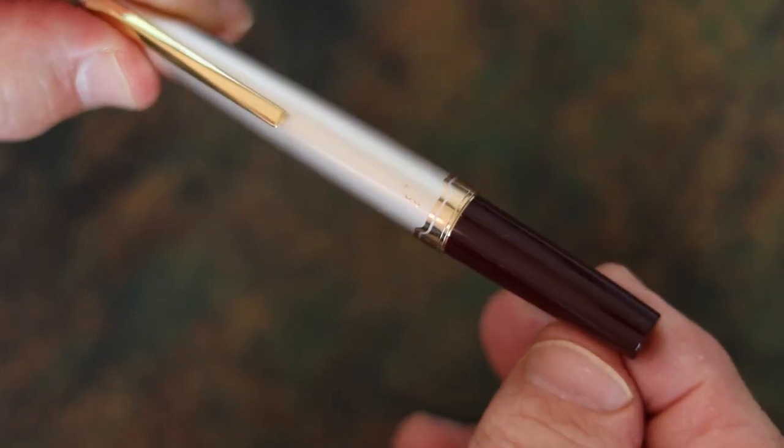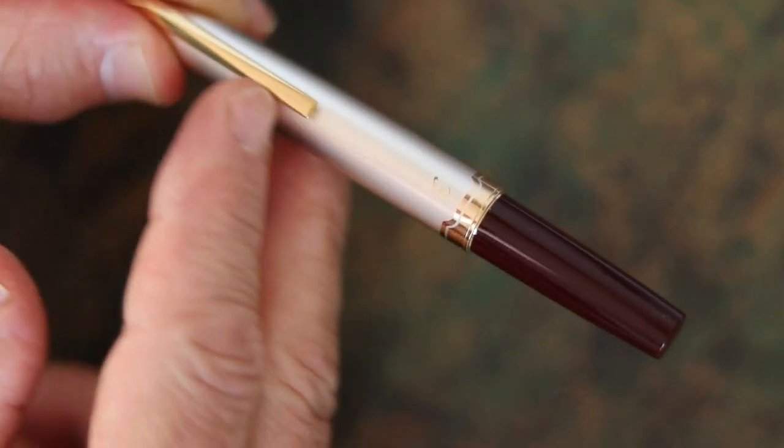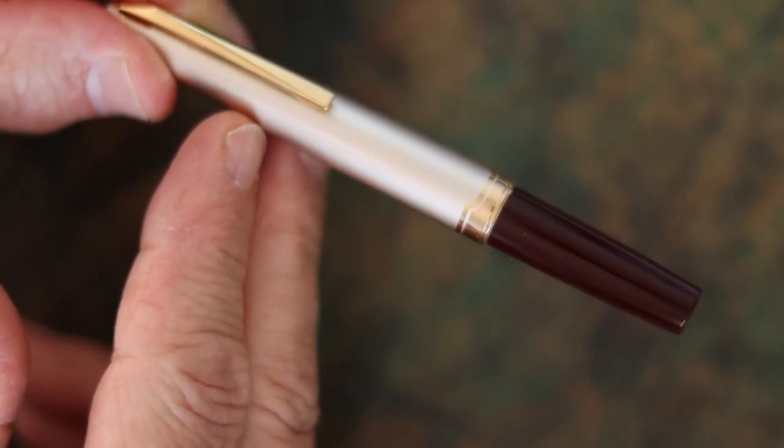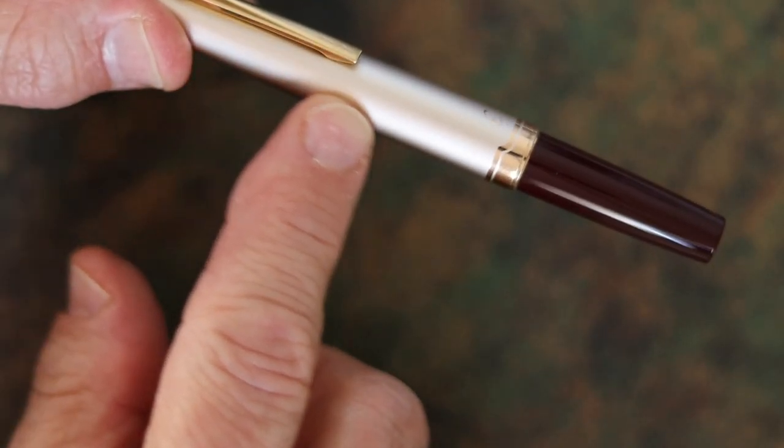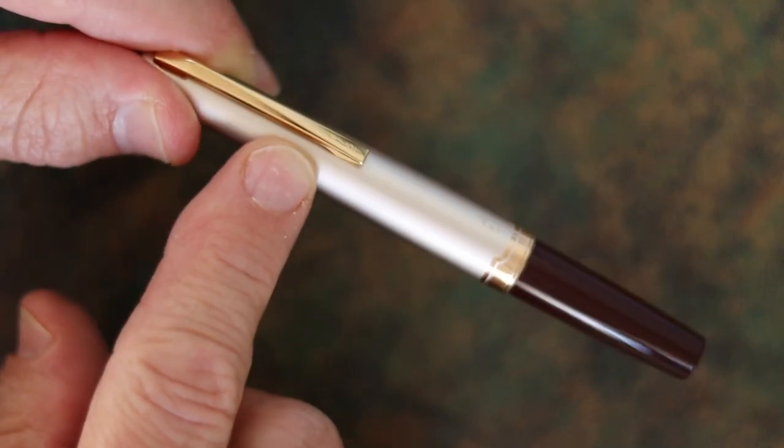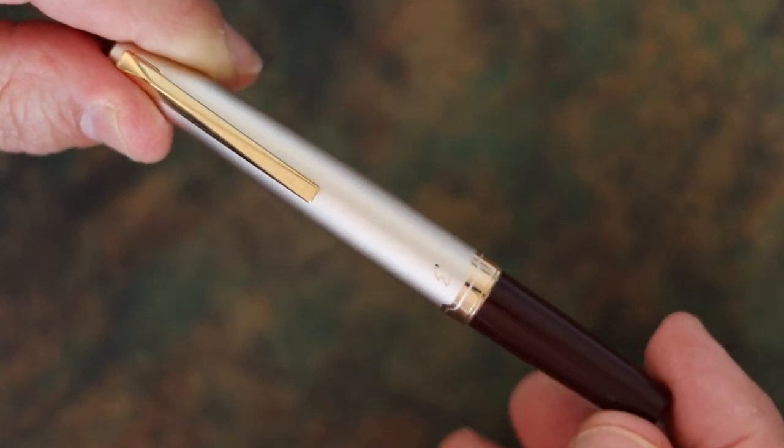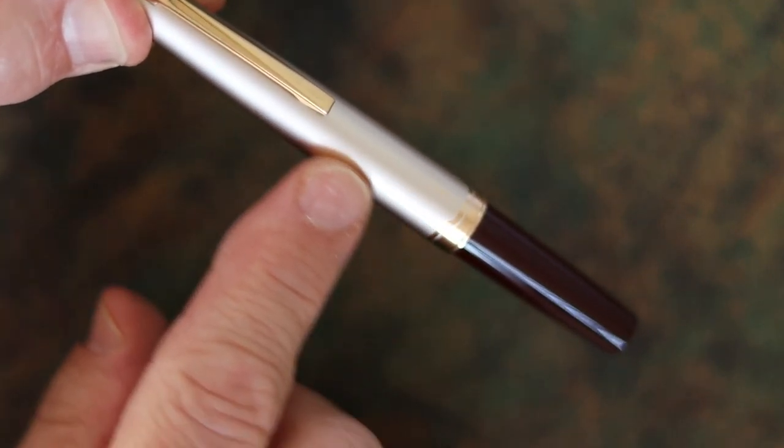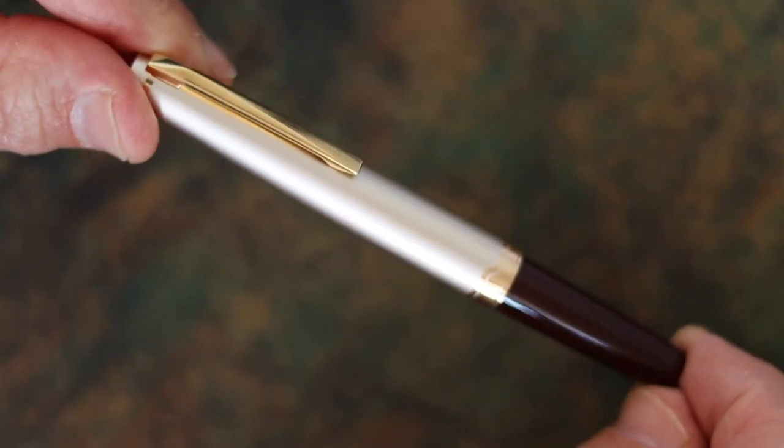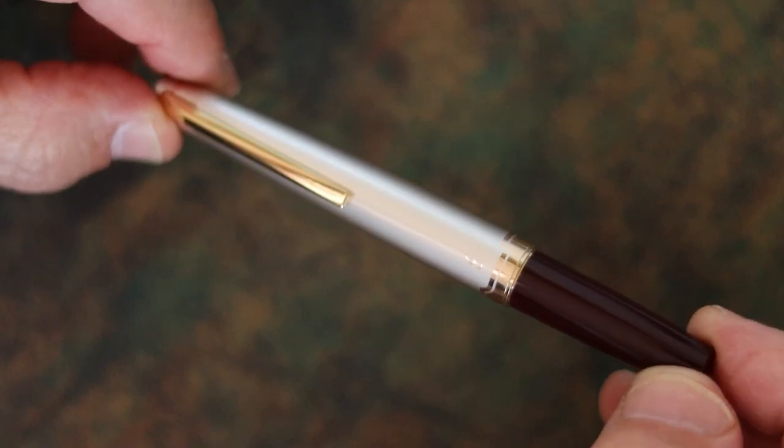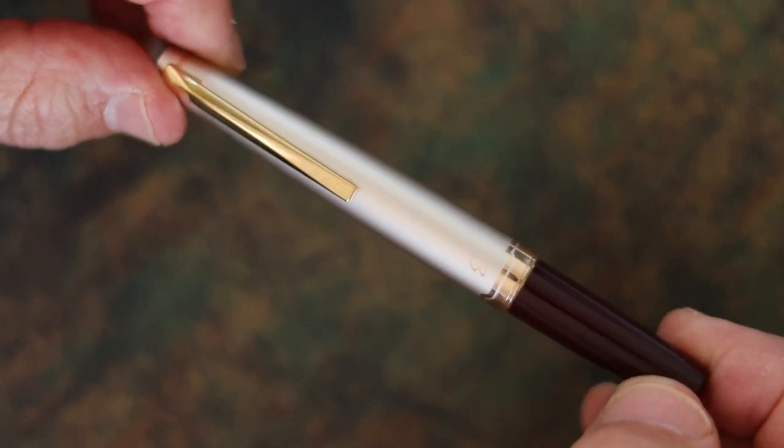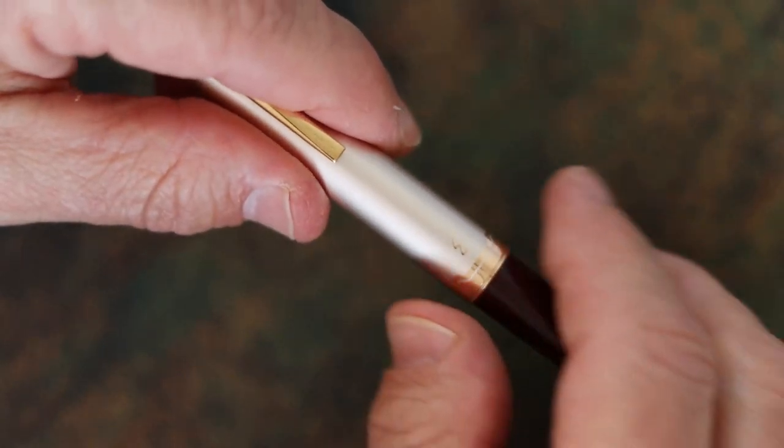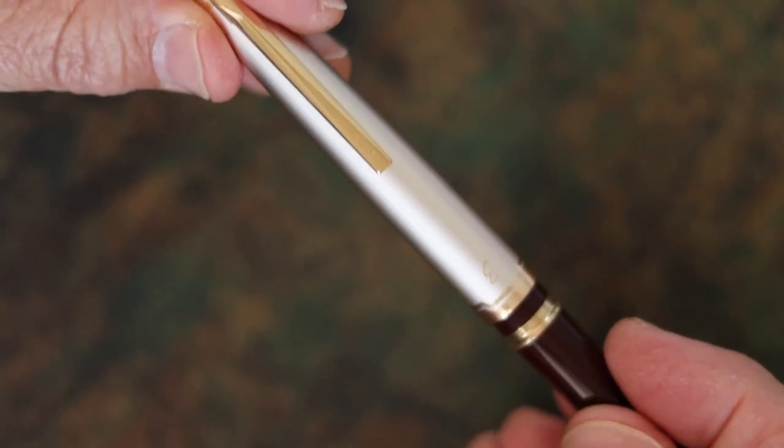The body of this pen is a resin and this particular pen is what they call the burgundy and ivory, although I would call this almost a very light gold. The cap, I'm thinking it's either aluminum or brass. It's very lightweight, but it's sturdy enough. So it's probably brass.